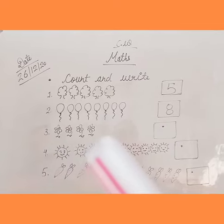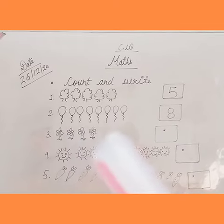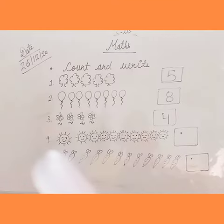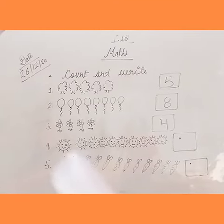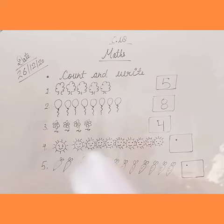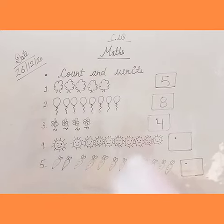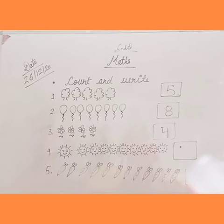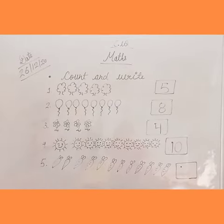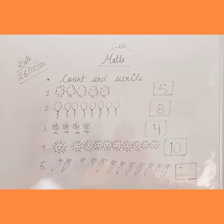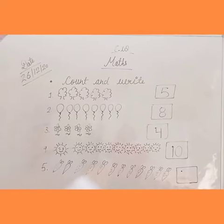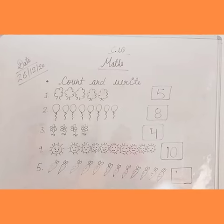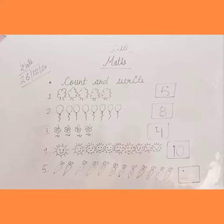Next, kids, count these flowers: 1, 2, 3, 4. Here are 4 flowers, so we will write number 4. Next, how many suns are given here? Let's count: 1, 2, 3, 4, 5, 6, 7, 8, 9, 10. Here are 10 pictures of suns, we will write number 10. Next, how many carrots are given here? Let's count: 1, 2, 3, 4, 5, 6, 7, 8, 9, 10, 11, 12. Here are 12 carrots, we will write number 12.